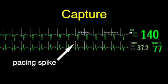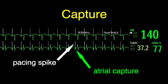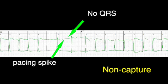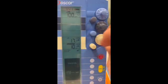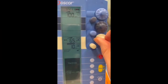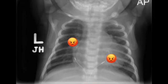Capture is the term used when the electrical output from the pacemaker results in an action potential from the heart — either a P wave or a QRS, depending on where it is pacing. If the energy is too low, non-capture can occur, when the pacemaker fires but nothing happens in the heart.